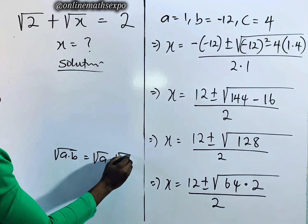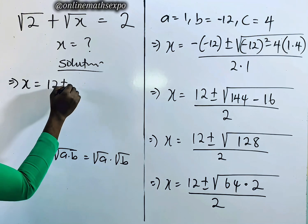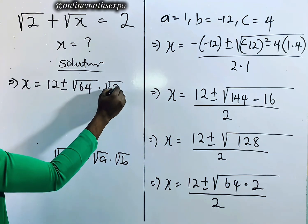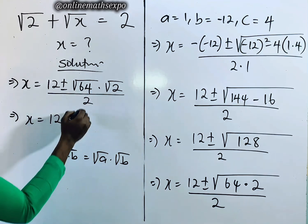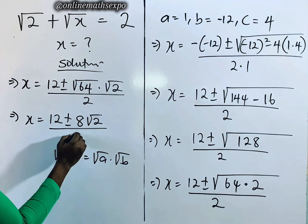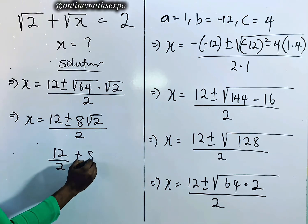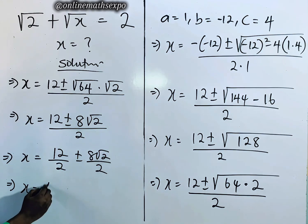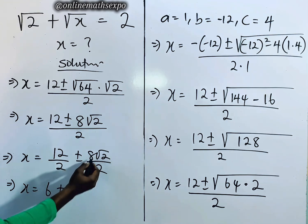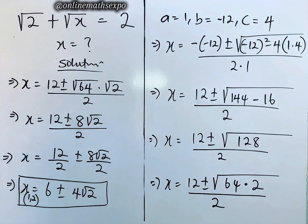Applying the rule that √(a×b) = √a × √b, we get x = (12 ± √64 × √2) / 2, which is x = (12 ± 8√2) / 2. Dividing each numerator term by 2, we get x = 6 ± 4√2. These are our two values of x.